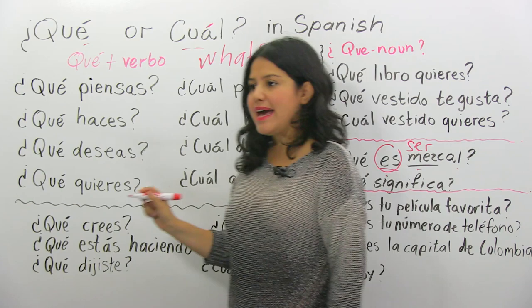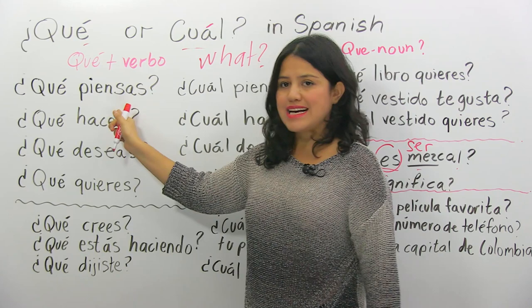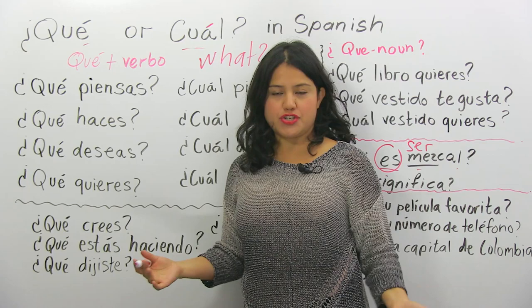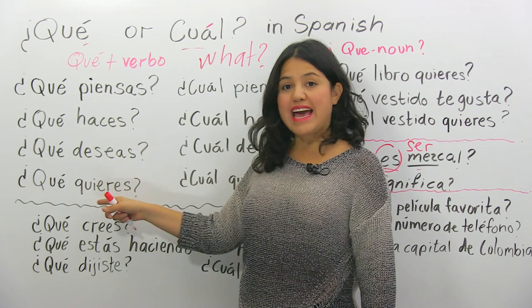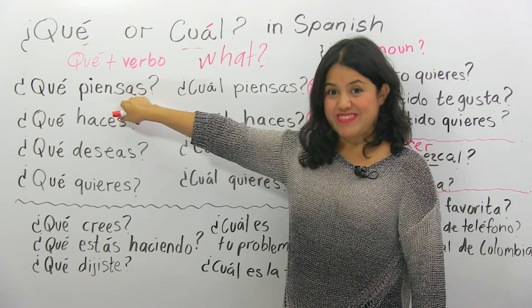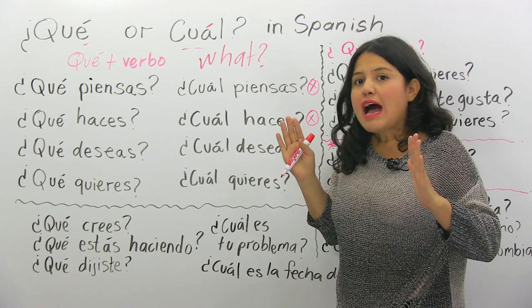¿Qué? ¿Qué? Más un verbo. Qué, as I said, in English would be equivalent to 'what.' ¿Qué piensas? — what do you think? ¿Qué haces? — what are you doing? ¿Qué deseas? — what do you wish or desire? ¿Qué quieres? — what do you want? I'm using qué with a verbo, una acción. Remember, un verbo es una acción.